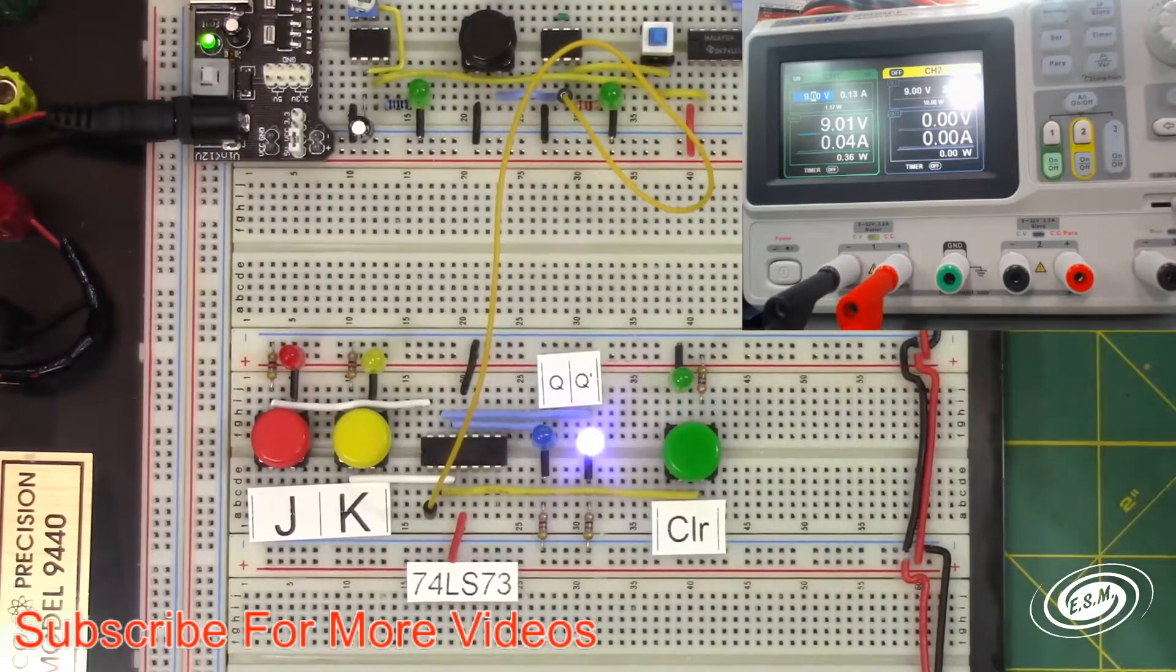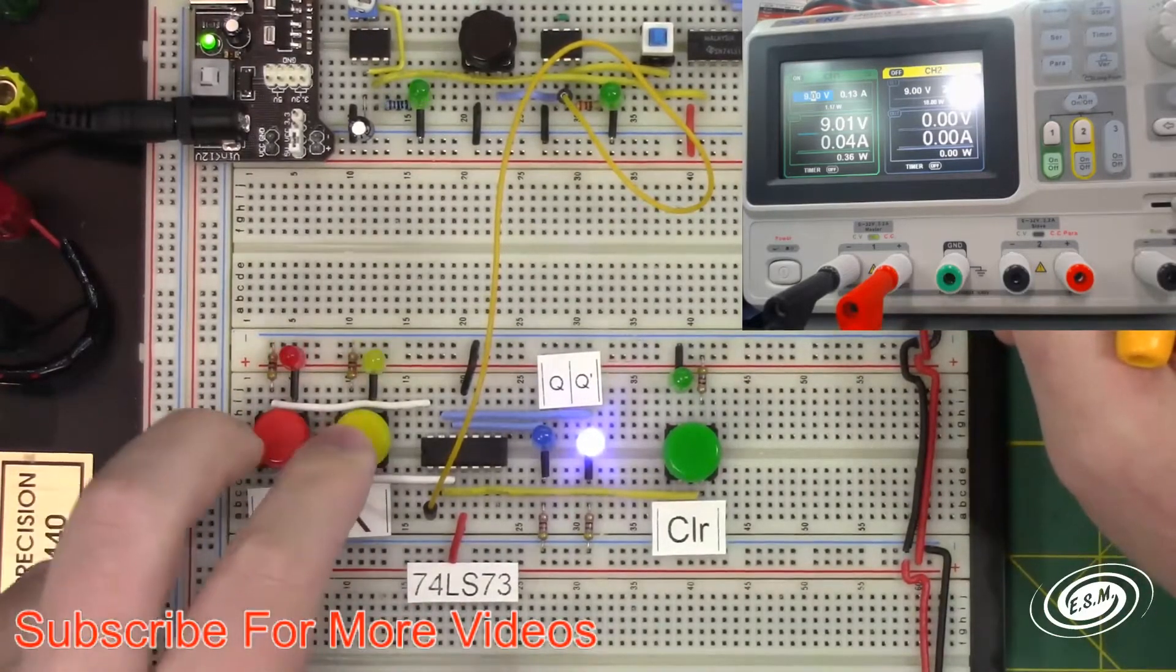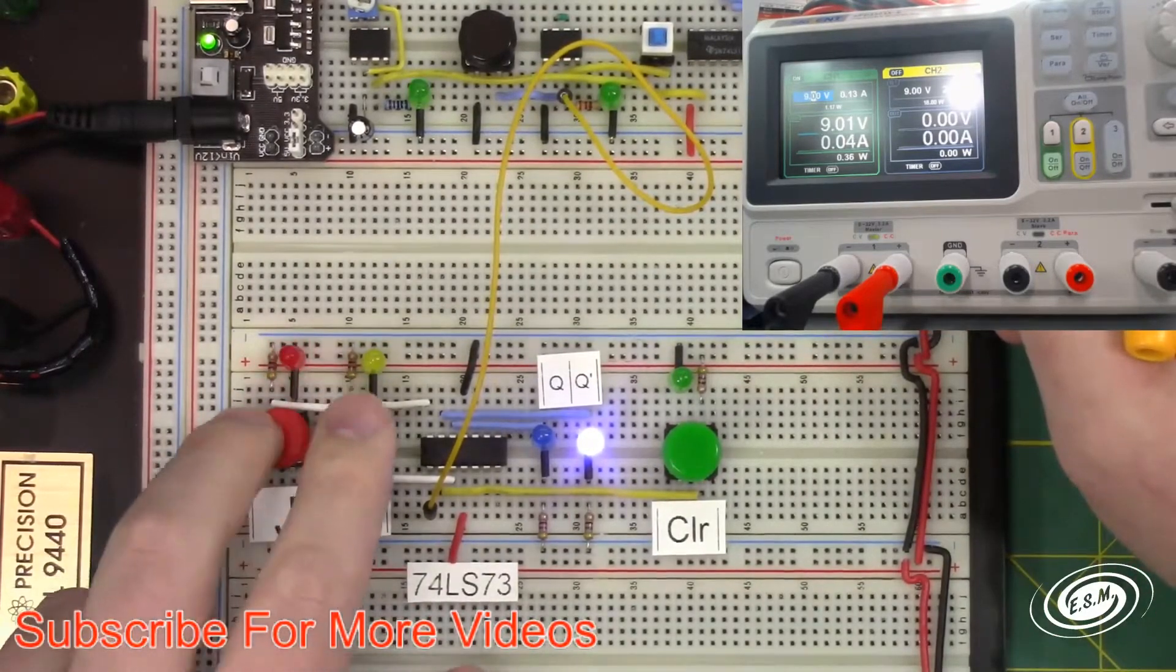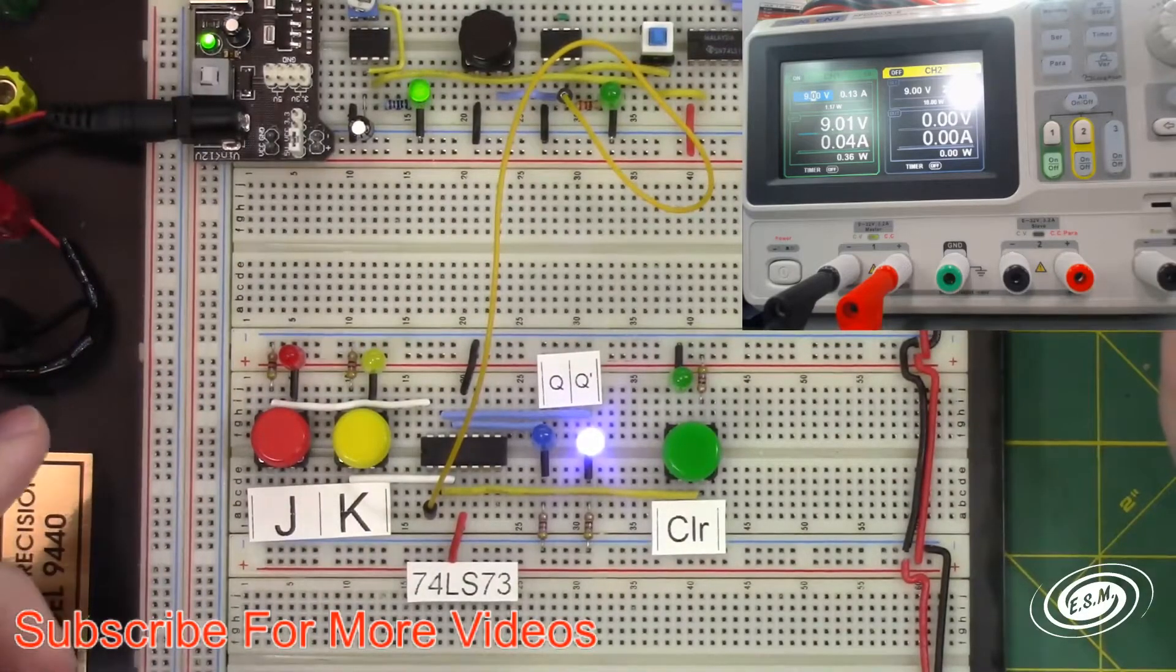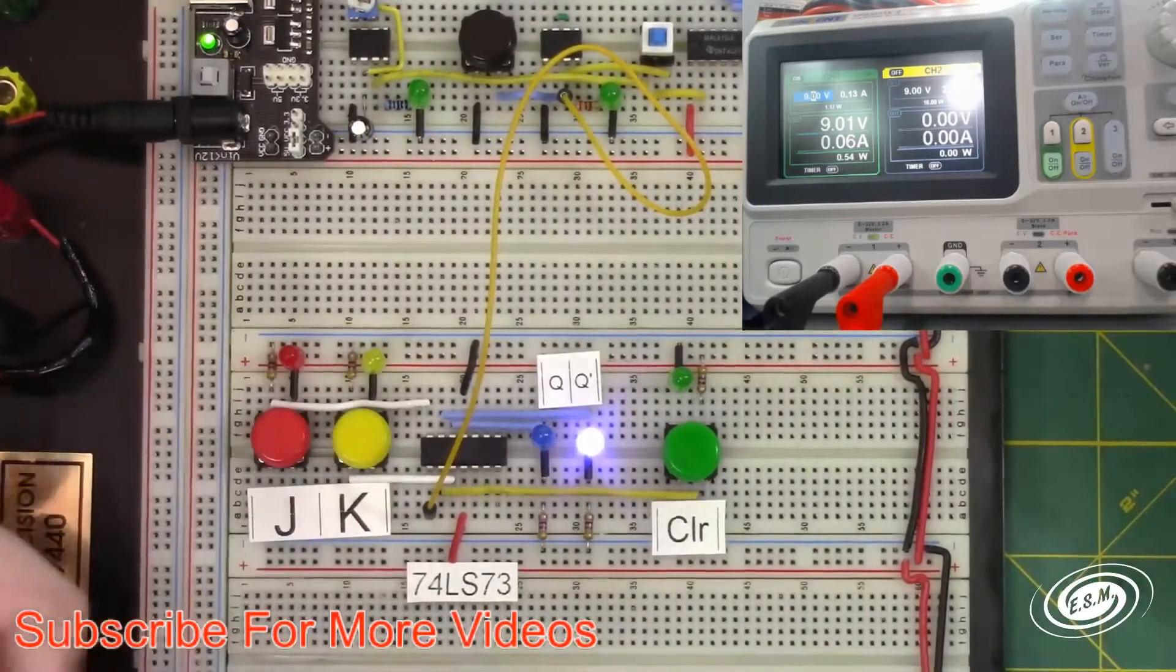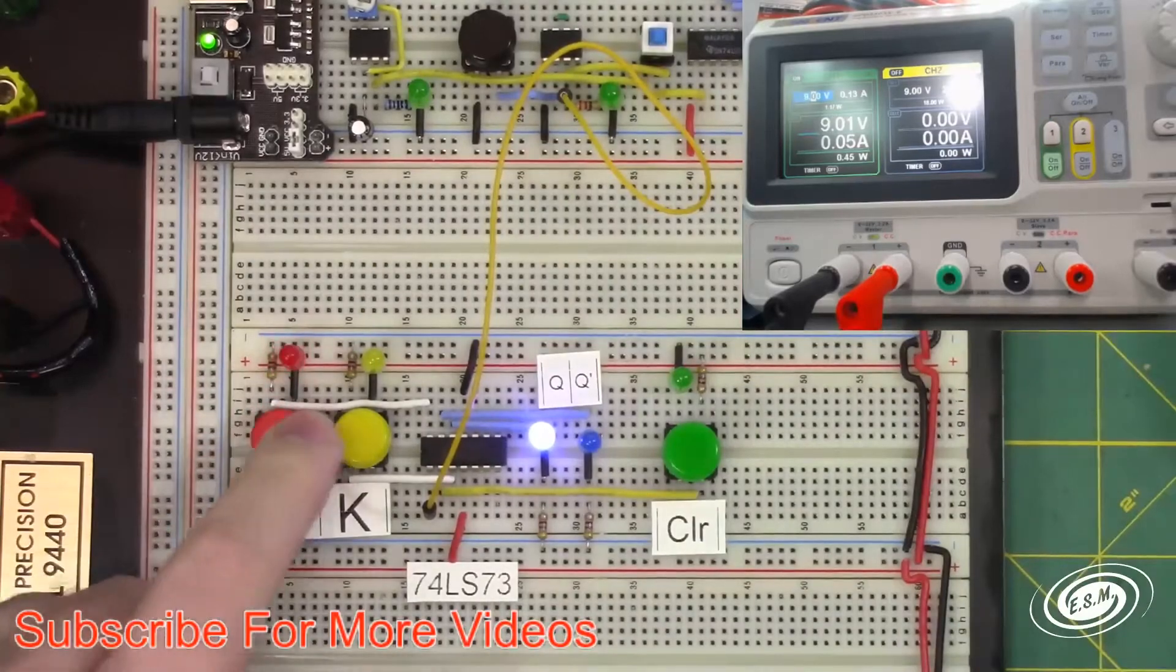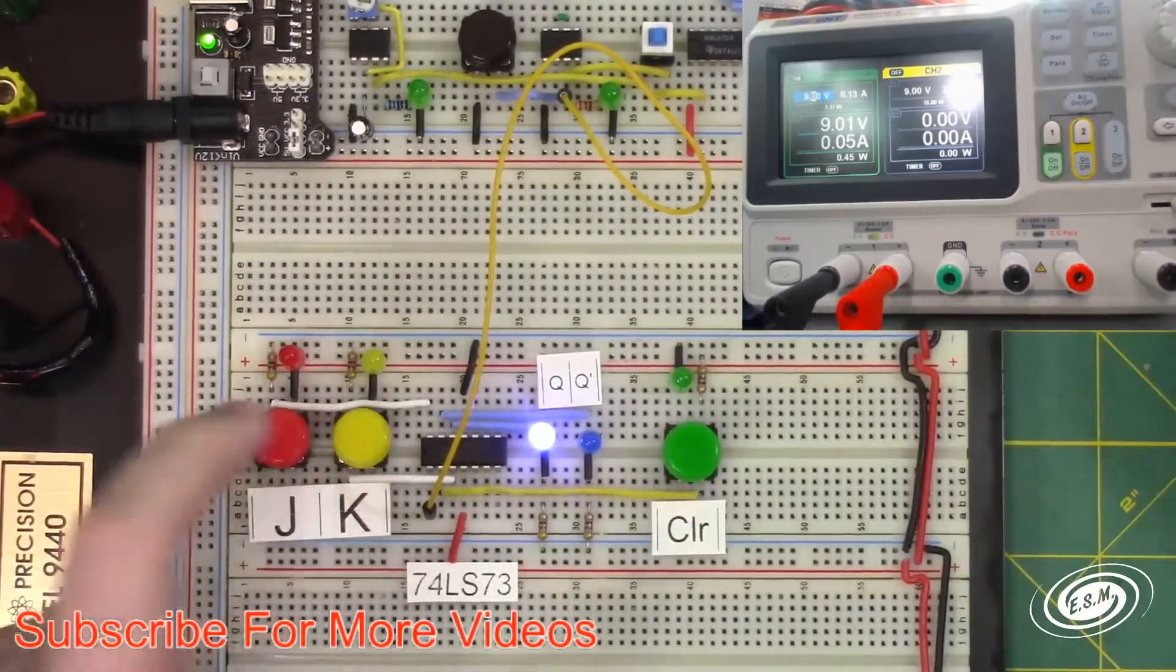I can clear that with the clear. Clear is asynchronous - can do that at any time. I can press J and K and nothing happens unless the clock is pulsed. So if I go to K here, well K is the reset, so that's not going to happen. If I go to J, I set it. Now I can press any of these other than clear.